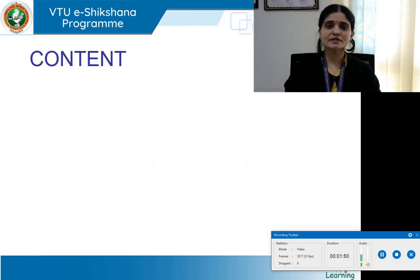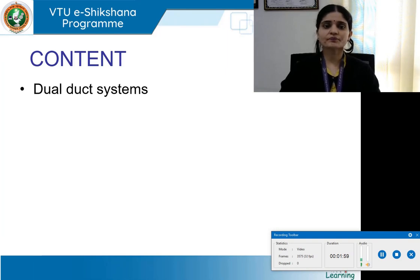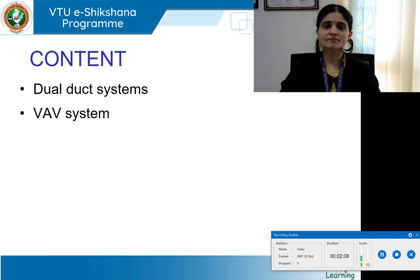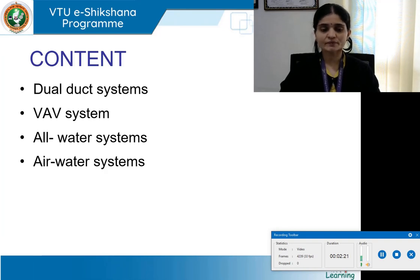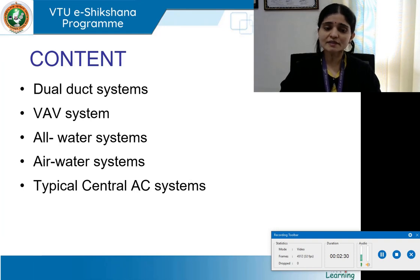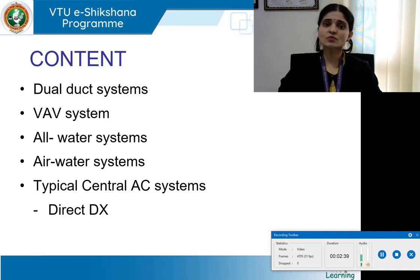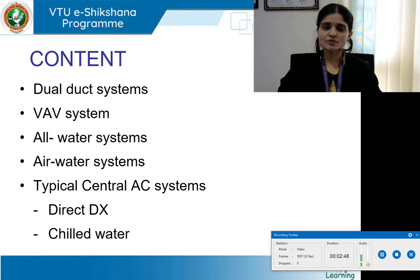Today is lecture number 8, proceeding with various types of air conditioning systems. We have started with central air conditioning. The learning objectives for today's lecture are: dual duct systems, VAV (variable air volume) systems, all-water systems, air-water systems, and typical central AC systems including direct or DX central systems and chilled water AC systems.